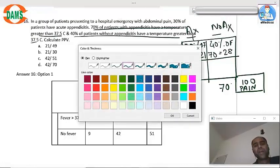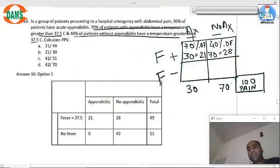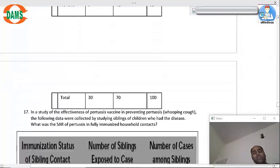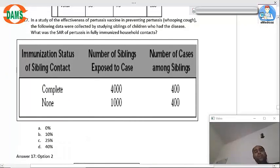Now we are calculating the PPV. So PPV will be 21 divided by 49, that is 3 by 7. Yes, so answer to this question was option number one.